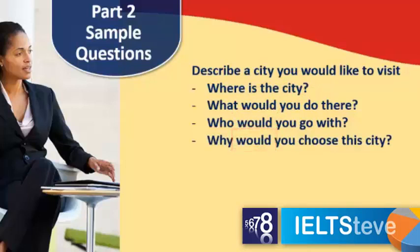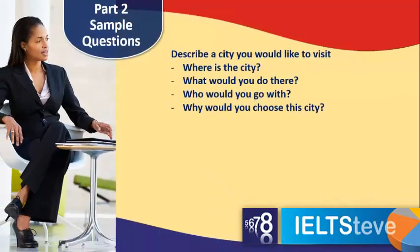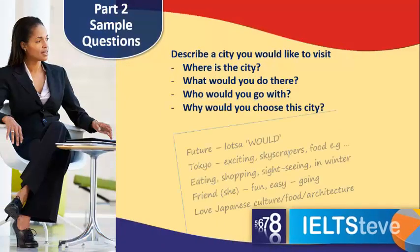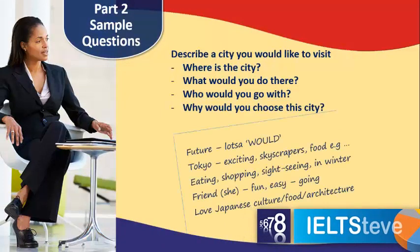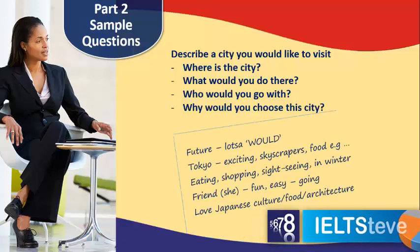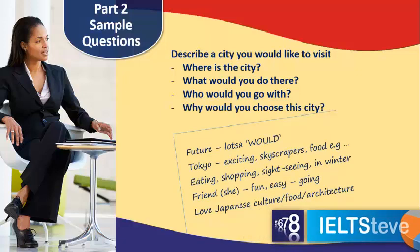You have one minute to take notes. Notice here this person is writing down lots of key ideas and also grammar tenses. You should be using 'would' a lot in your answer. They've got some adjectives and nouns — just the key ideas they're going to write about. Notice that when they mention a friend, they write down the pronoun.